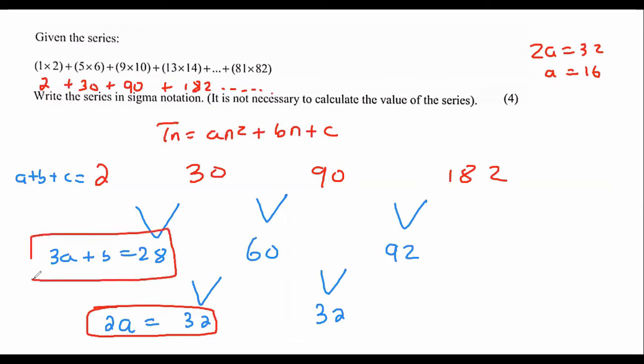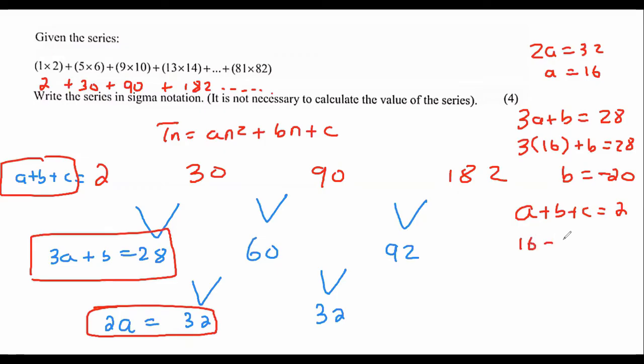Then I'm going to move on to this one. And so if you had to work out b, what would that be? Minus 20. And then if we move up to the last one, we get a plus b plus c equals to 2. And so a is 16, b is minus 20. And so that's minus 4 plus c equals to 2. And so c would be equal to 6.